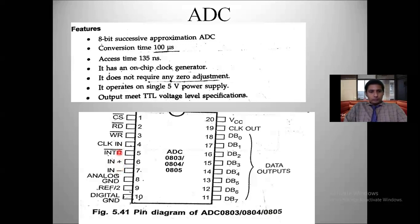The reference-by-two pin is used in applications where you have, for example, a 10-volt analog input but need a 5-volt input. In that case, the reference-by-two pin is connected to 10 volts and it will give 5 volts output. So the reference-by-two pin makes the analog input voltage half of its value. It is only used when required; otherwise it is not needed. INTR bar is 1 during conversion and 0 when conversion is completed.